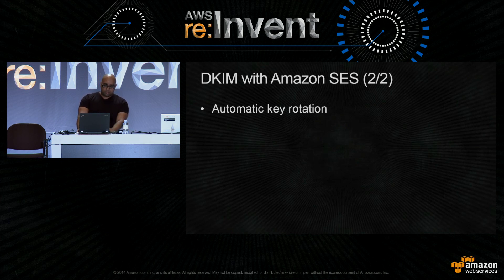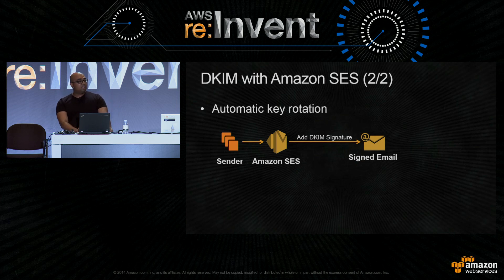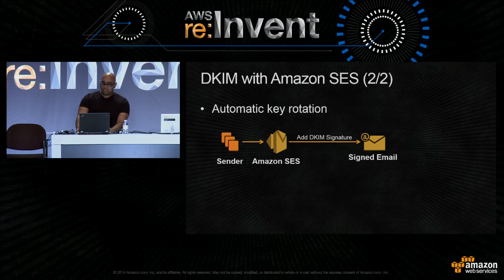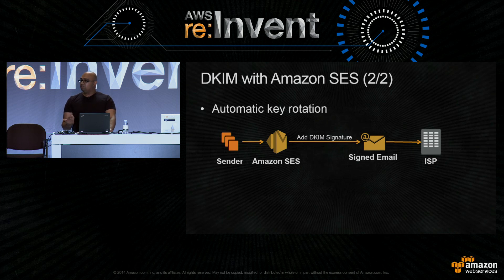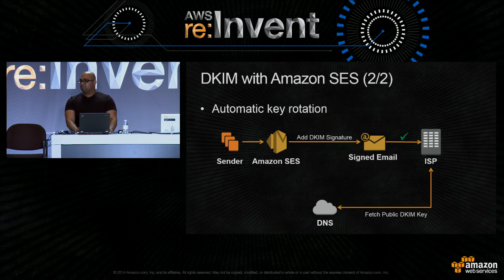Let's walk through how this works. First, you, the sender, give us an email request to send. SES will then compute a DKIM signature and add it to the email, producing a signed email. Like with all emails, it will then find its way over to the ISP. The ISP will want to validate the signature — that you are actually authenticated to send from that domain — by fetching the public DKIM key associated with that signature, and at that point they are able to validate that it is actually a valid email.